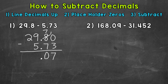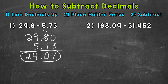So we place the decimal in our answer by bringing it straight down. Then we move to the ones where we have 9 minus 5, which is 4. And then lastly, the tens place, we have 2 minus 0 — we don't have anything in the tens place for 5 and 73 hundredths — so let's just bring that 2 down. And our final answer is 24 and 7 hundredths.